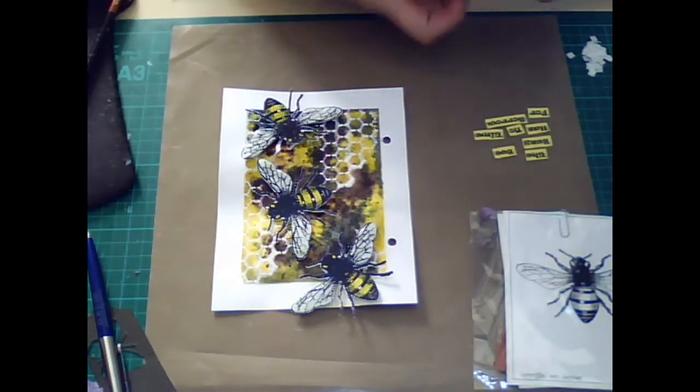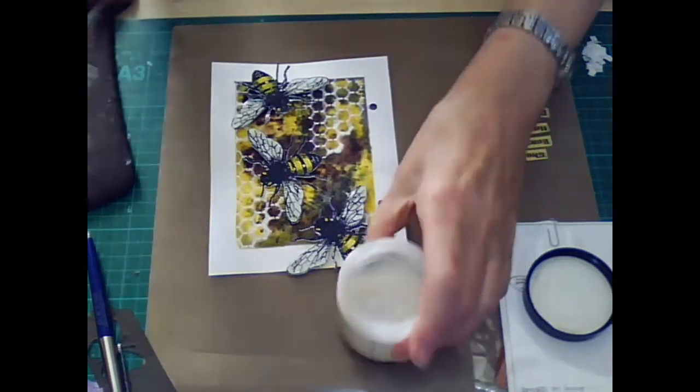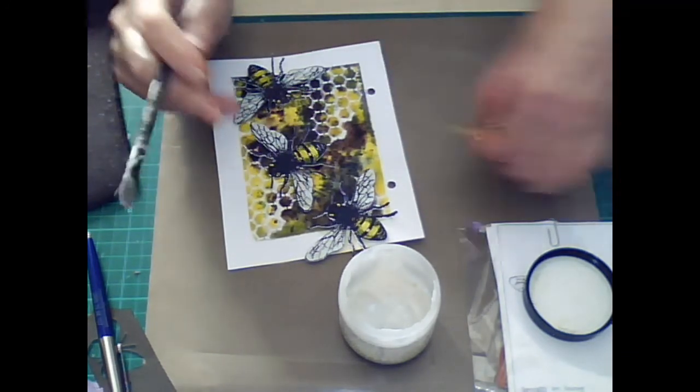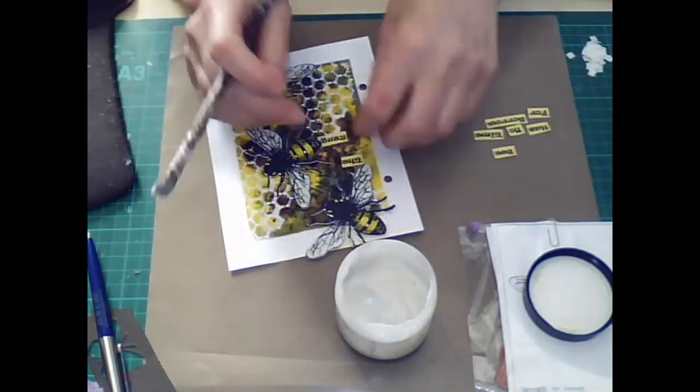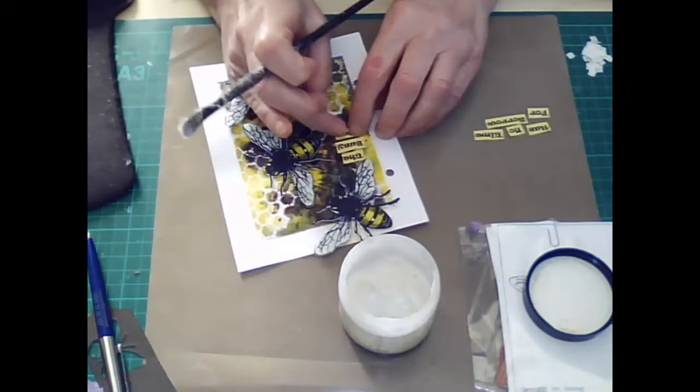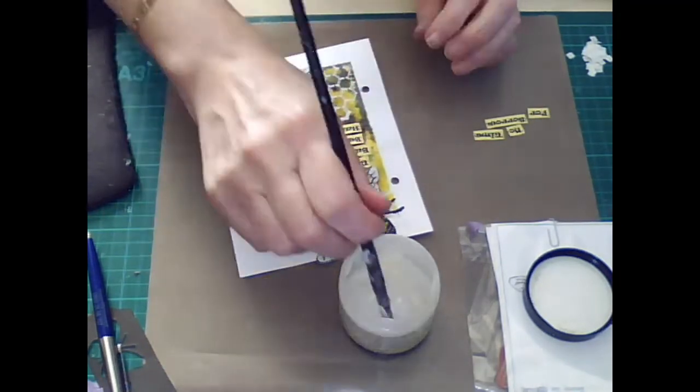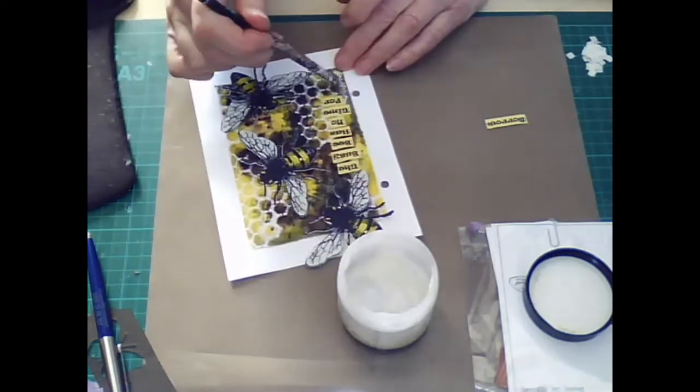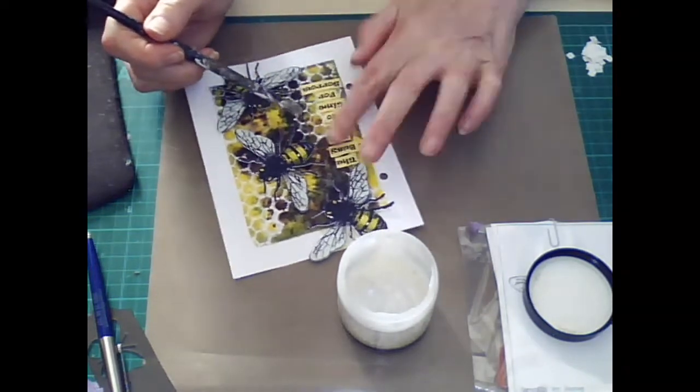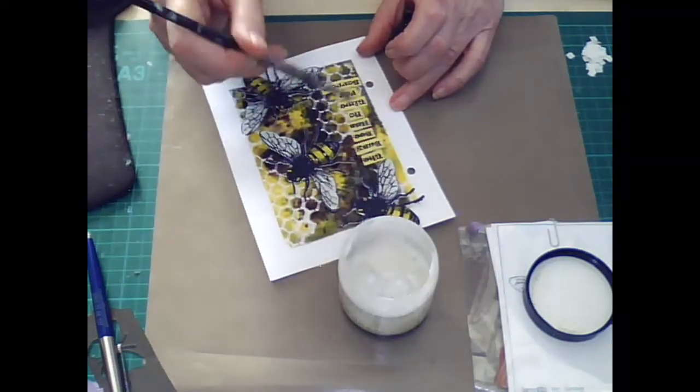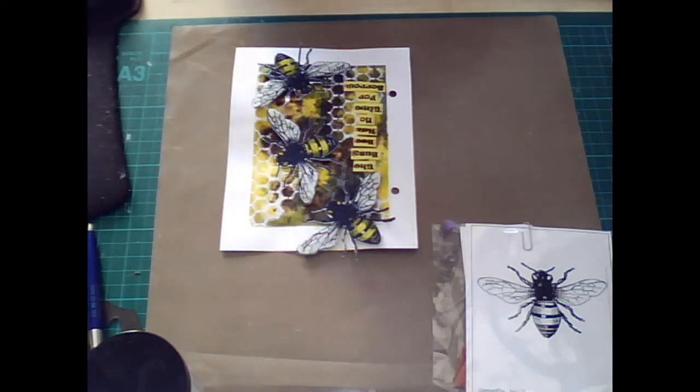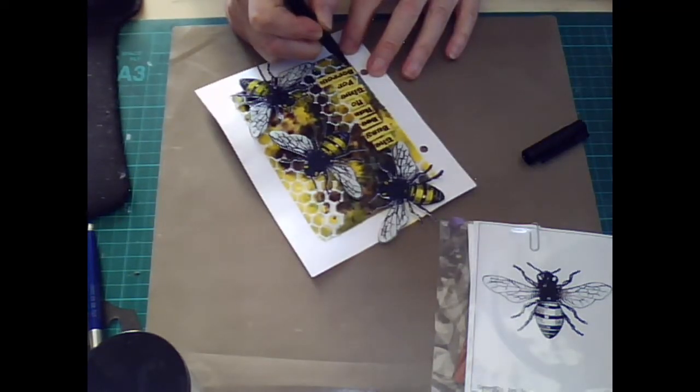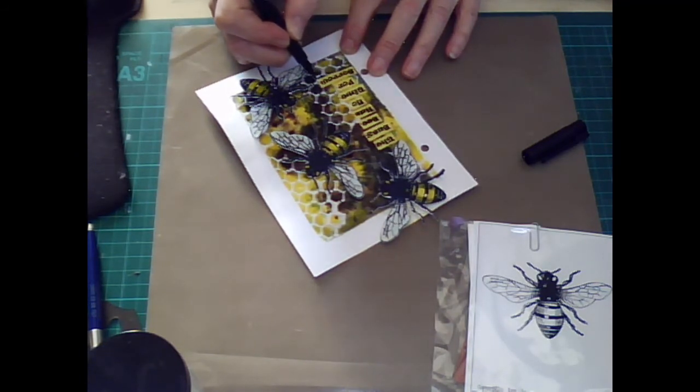Next I'm going to glue down my sentiment with Claudine Helmuth Matte Multi-Medium. I've got a Faber-Castell Pitt Pen, this is the small brush tip, and I'm just going to go around each of the words to accentuate it and make it pop a bit.